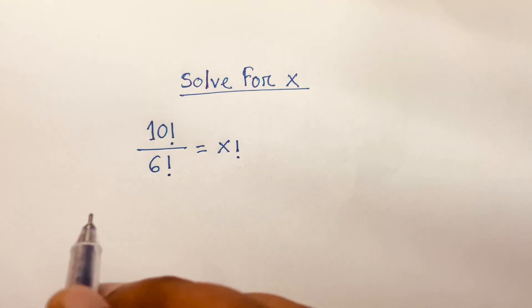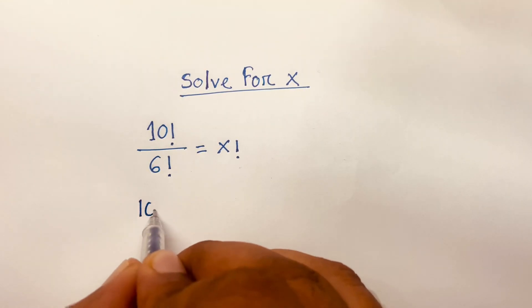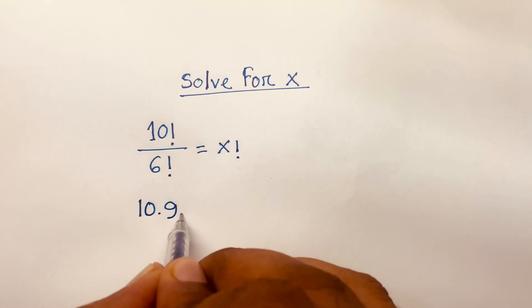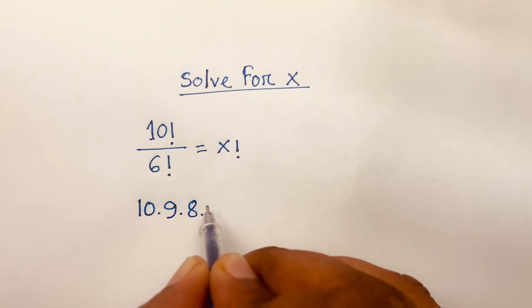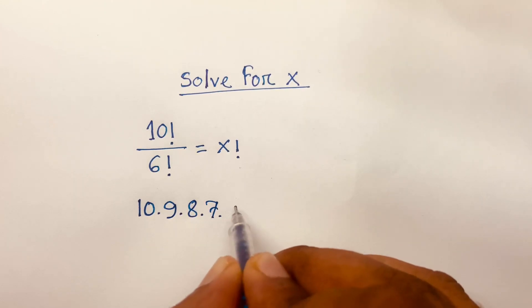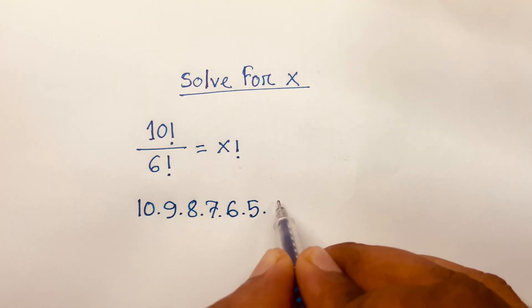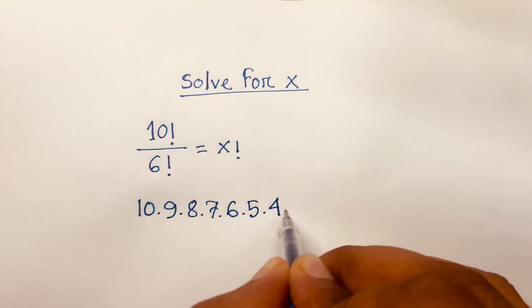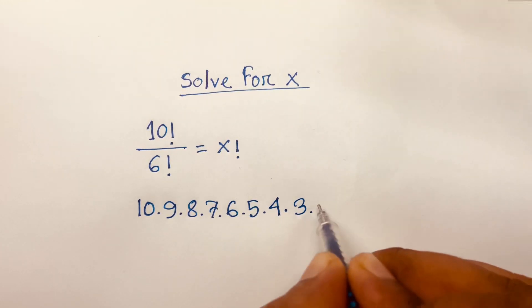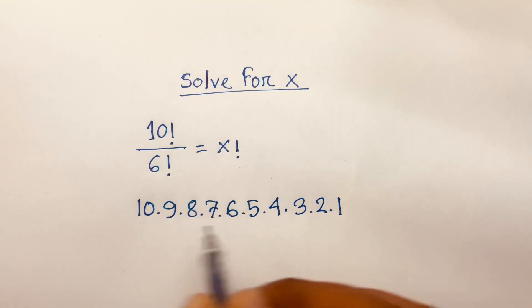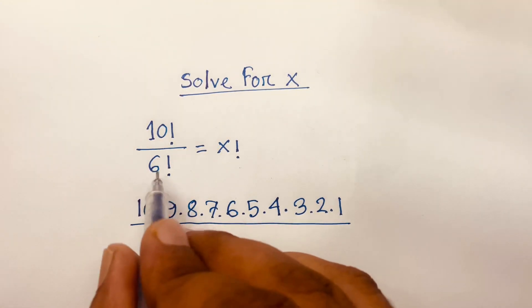So 10 factorial, it will be 10 times 9 times 8 times 7 times 6 times 5 times 4 times 3 times 2 times 1, over 6 factorial.